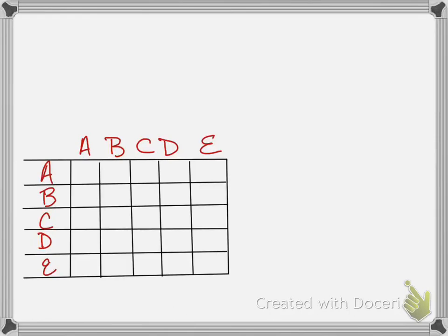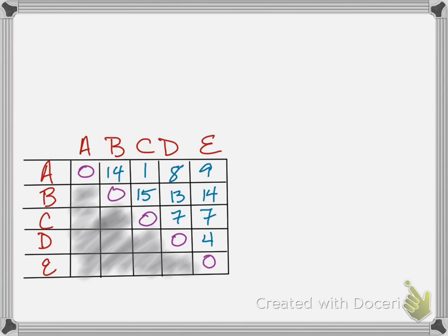First, set up your matrix. All the taxa go along both sides. Then find the number of differences between each pair. No differences between identical taxa and you won't need one half the matrix. Then the number of differences are counted up and put in the matrix.